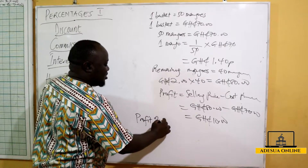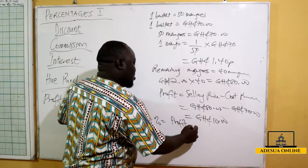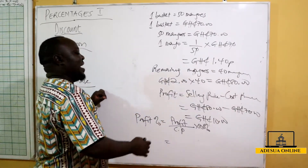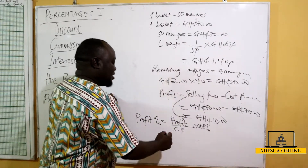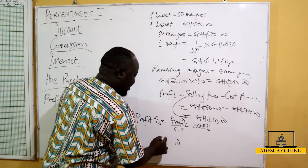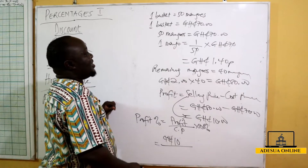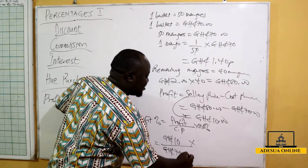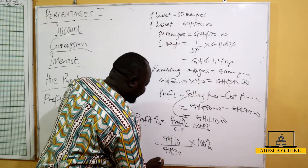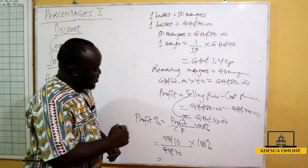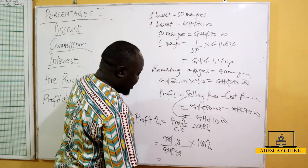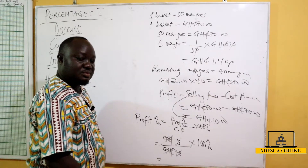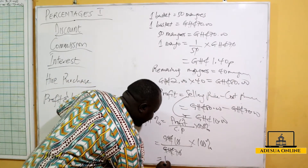Now I want to find my profit percent. Profit percent is equal to profit over cost price times 100%. Profit is selling price minus cost price, which equals 10 cedis. So I have 10 cedis over the cost price of 70 cedis, times 100%. The zeros cancel, leaving 100 over 7, and 100 over 7 gives us 14.28%. So the percentage profit is 14.28%.